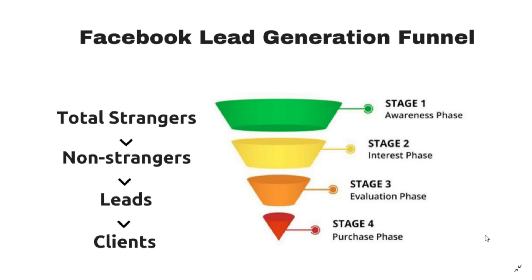Once they respond to our ad, we invite them to like our page. Once they like our page, they become that second audience of non-strangers. It's in stage two — the non-strangers stage — where you're building your audience and establishing credibility through the content you post on your page. When someone likes your page, anything you post automatically gets sent out to them. It doesn't go out to 100% of your page likes — it's a very small percentage — but if you spend a dollar or two, depending on how many page likes you have, you can reach all of them within a day.